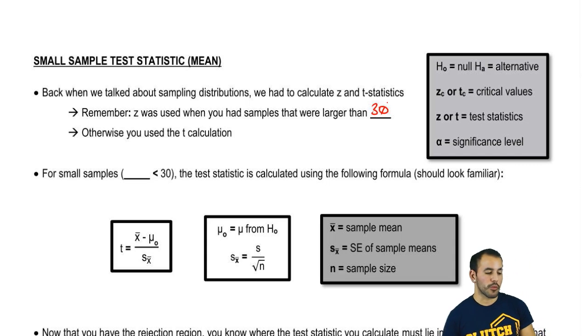The reason that this happens is that when you have a sample size that's larger than or equal to 30, the sample standard deviation essentially estimates the population standard deviation. But when it's smaller than that, the sample standard deviation may be a little off or biased in a certain way. So that's why we have to use the t distribution.